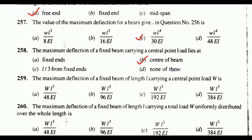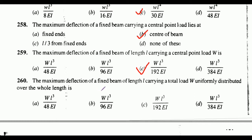The maximum deflection of a fixed beam of length l carrying a central point load w — the correct answer is option C: wl³ / 384EI. Next, the maximum deflection of a fixed beam of length l carrying a uniformly distributed load of w over the whole length — the correct answer is option D: wl³ / 384EI.